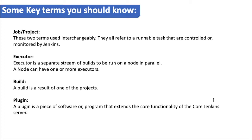A build is the result of a project — when you build a project it generates an output file, and the final output will be a binary artifact. Plugins are essential because without them Jenkins cannot function properly. A plugin is a piece of software that extends the core functionality of the Jenkins server, and we need to install all required plugins during setup.